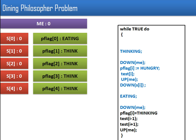Once eating is done, the next statement decreases the value of the 'me' semaphore to zero, entering the critical section. The current state changes back to thinking, and then test is called on i-1 — the left neighbor of the current philosopher. In test we check whether neighbors want to eat: if they are hungry and their neighbors are not eating, we give them the chance to eat. This is how the Tanenbaum solution works for the dining philosopher problem.